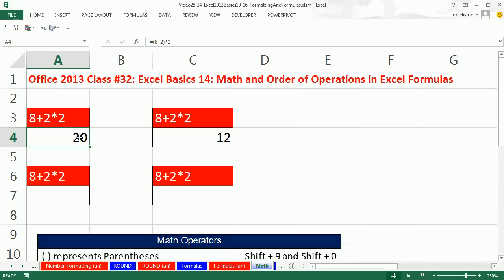Raise your hand if you think it's 20. I'm raising my hand. Now raise your hand if you think it's 12. I'm raising my hand. I always raise my hand for both. Excel will tell us what the actual answer is if you don't know your math order of operations.